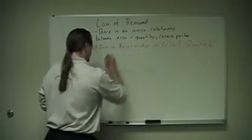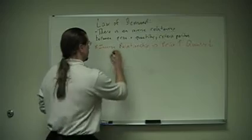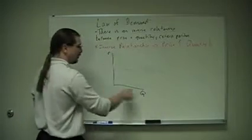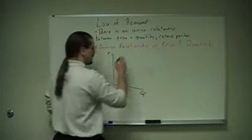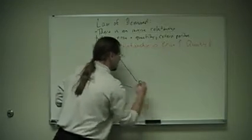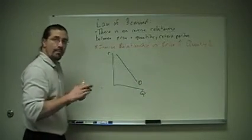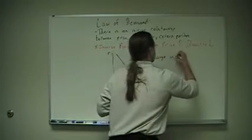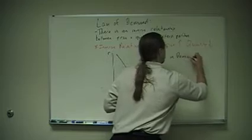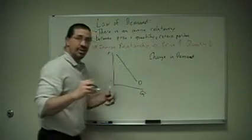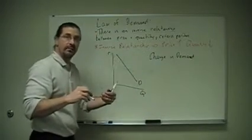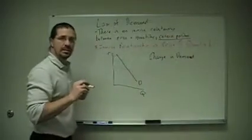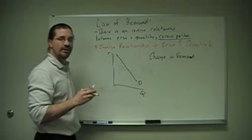Here we have our standard price and quantity demand curve. I will always abbreviate P and Q for price and quantity. Now, what makes a change in demand? A change in demand—and this is different than a change in quantity demanded—this is where ceteris paribus is released. We allow some other factor to change.